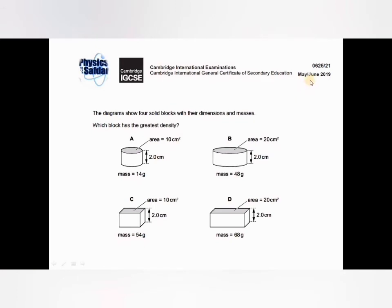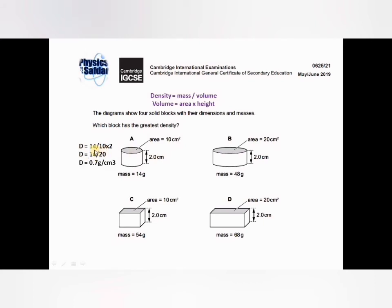This question is from the May/June 2019 series. The diagrams show four solid blocks with their dimensions and masses. Which block has the greatest density? Density equals mass divided by volume. In all diagrams we have mass in grams, and we can calculate volume using area times height. For diagram A: mass is 14 grams, volume is 10 times 2 = 20, so density is 14 over 20 = 0.7 grams per cubic centimeter.